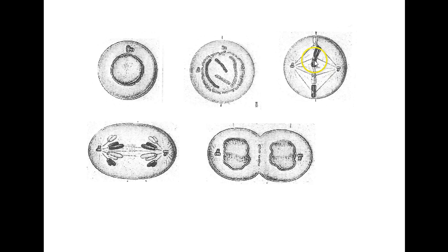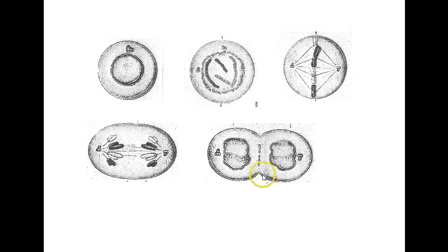The spindle fibers are attached to the kinetochores on the centromeres from either side. Moving to anaphase: the centromeres have split and the sister chromatids are being pulled away from each other, forming that V-shape as they're pulled along. And here in telophase, chromosomes have reached opposite ends of the cell, uncoiling back towards chromatin. The nuclear envelope is forming around those chromosomes, and cytokinesis occurs, splitting the cytoplasm into two new cells.